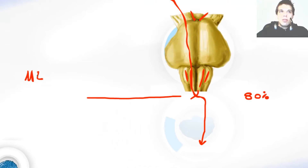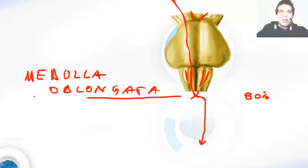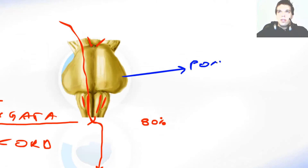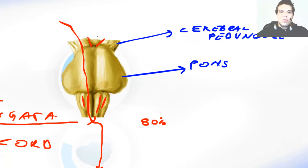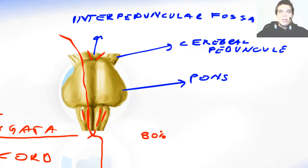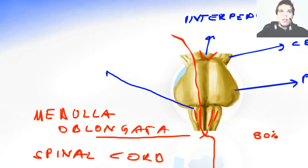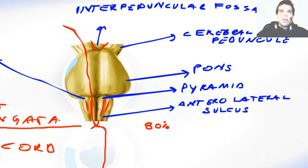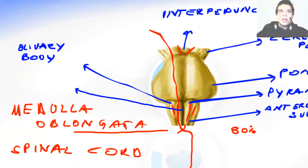Up there we have the medulla oblongata, and down is the spinal cord. Let's write this all down. This was the pons, this was the cerebral peduncle, this was the interpeduncular fossa. Then we had the olivary body, we had the pyramids. We had this sulcus over here — it was the anterolateral sulcus — and this sulcus over here was the anterior median sulcus.